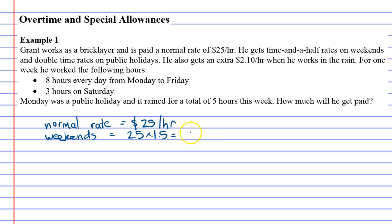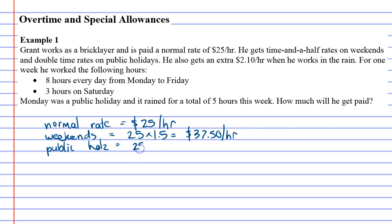On weekends he'll get $37.50 an hour — it's really good to find all the different hourly rates. He gets double time on public holidays, so on public holidays he gets 25 times 2 for double time, which is $50 an hour.